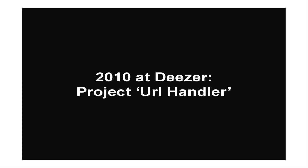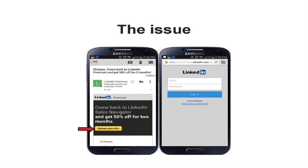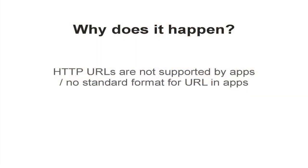So why did I come here to talk to you about deep linking, which is more of a marketing training topic currently? It's because in 2010 at Deezer we had a project called URL Handler, and we didn't have a proper name for that — this name appeared since, it's deep linking. So let's talk about the issue. You receive a mail, you click a link, you have the LinkedIn application installed and you are logged in, but it launches the mobile website where you are asked to login. It's a really disappointing experience. Deep linking is a solution to that, because apps and web are two separate universes and URLs, which are the standard for web, are not supported in apps.